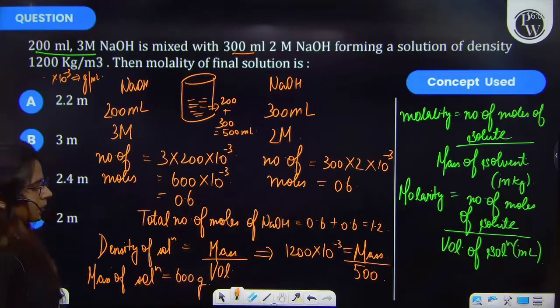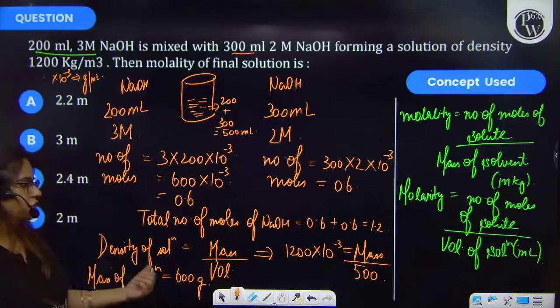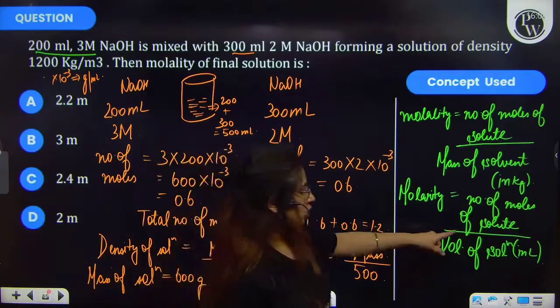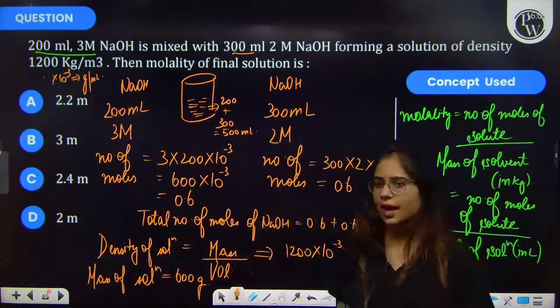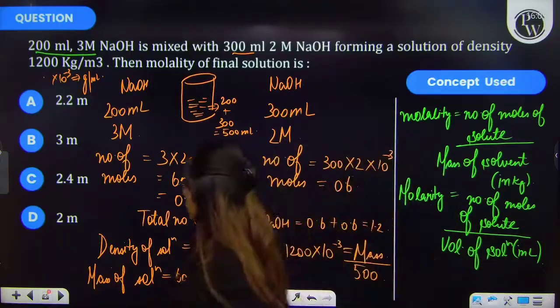So therefore on solving you will be getting mass of solution to be 600 gram. Now this is the mass of solution. But you have to find the mass of solvent. So for that you have to subtract the mass of solute from it.